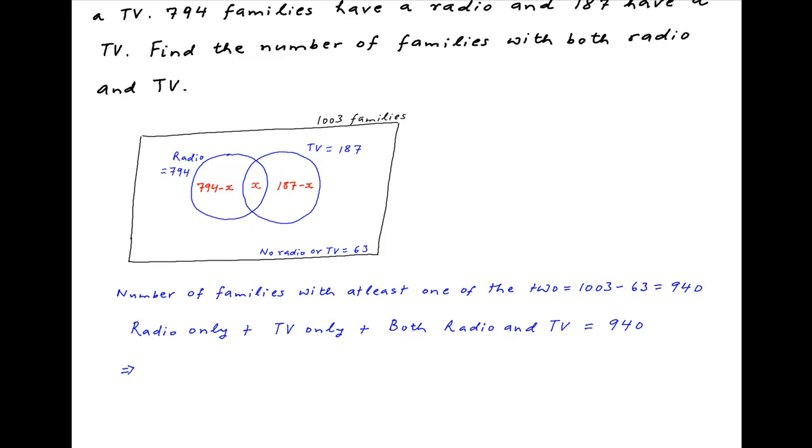Number of families which own a radio only is equal to 794 minus X. Number of families which own a TV only is equal to 187 minus X. And families which own both radio and TV has been assumed to be equal to X. All of this adds up to 940.